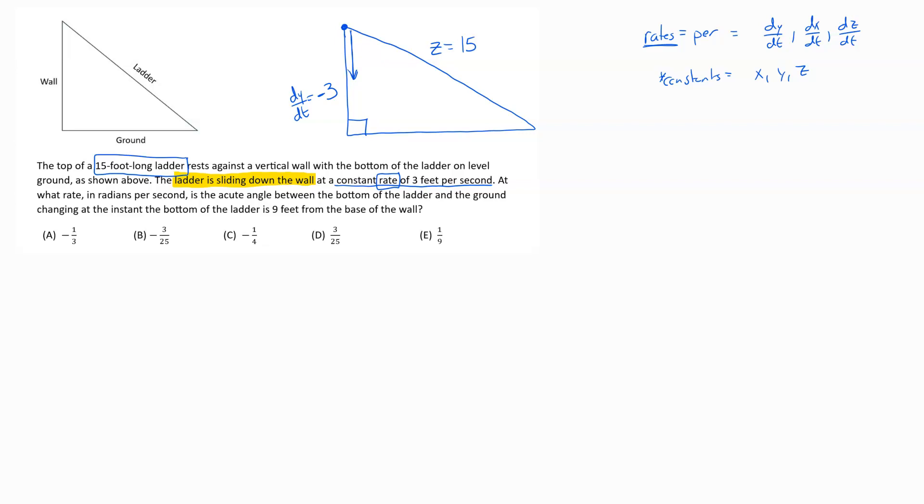At what rate in radians per second - so again, we're talking rates, so we're talking a derivative piece here - is the acute angle between the bottom of the ladder and the ground changing? So that's what they're wanting us to go find. So that's going to be this angle here, and it's the rate. So they're wanting us to go find d theta dt. That's the question mark on this problem.